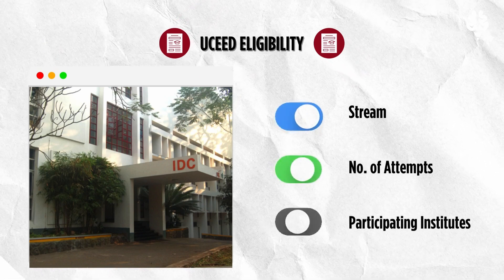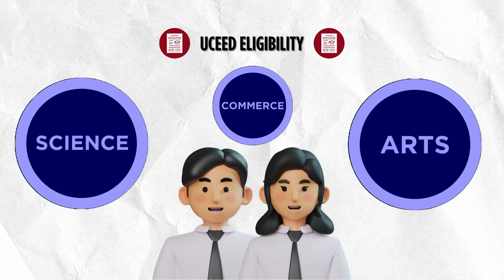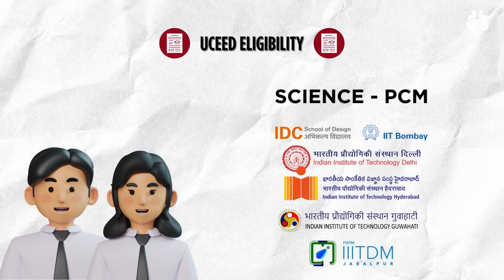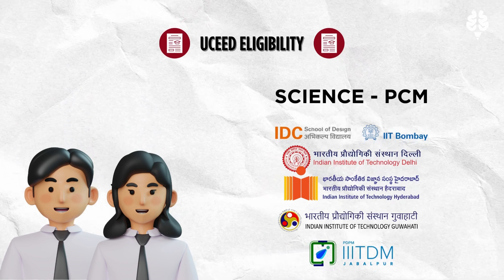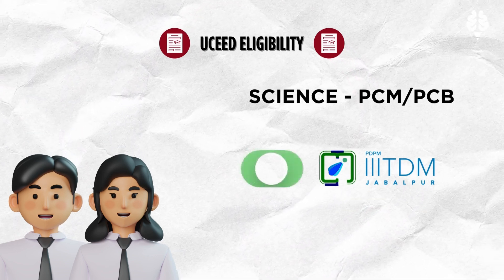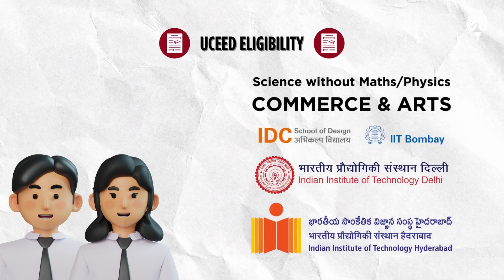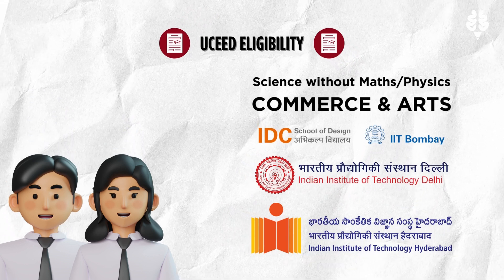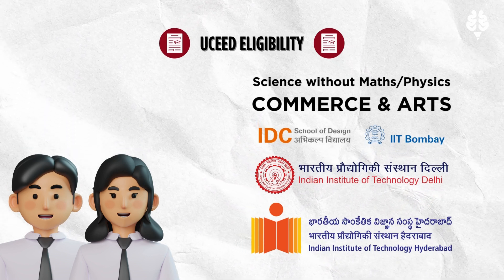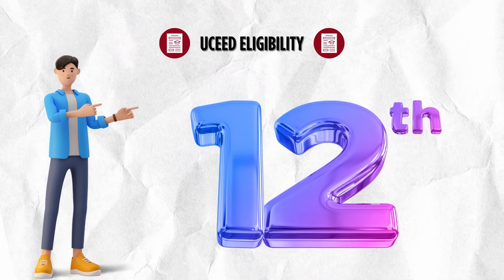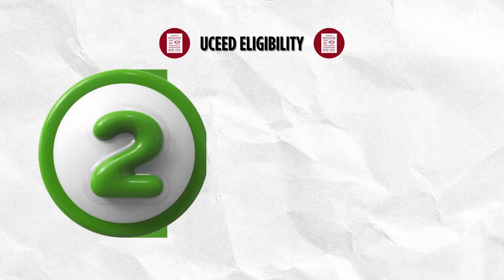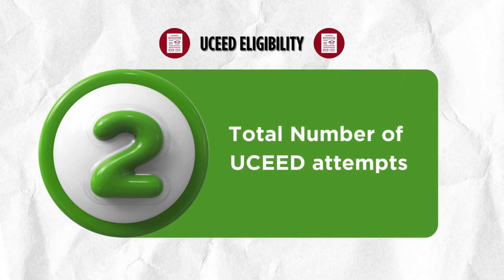Now let's have a look at the eligibility criteria. Students from all streams can apply for the UCEED exam, but there is a catch. Students from the Science stream with Physics, Chemistry and Mathematics (PCM) as subjects are eligible to apply for all six participating institutes. Students from Science stream with Physics, Chemistry, Maths or Biology are eligible to apply for IIT DM Jabalpur. Students from any other stream — Science without Mathematics or Physics or Chemistry, Commerce, Arts and Humanities — are eligible to apply for IIT Bombay, IIT Delhi and IIT Hyderabad. Students currently in 12th or equivalent can attempt the UCEED exam, as can students who have passed 12th one year prior. A candidate can attempt the UCEED exam for a maximum of two times, and that too in consecutive years.